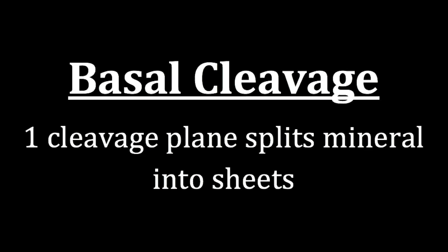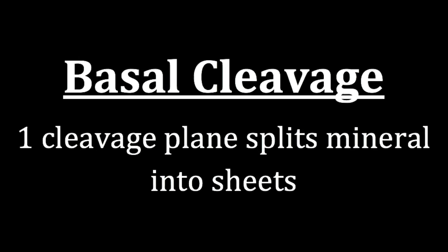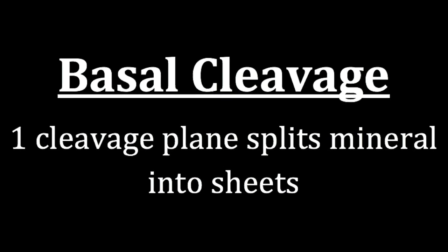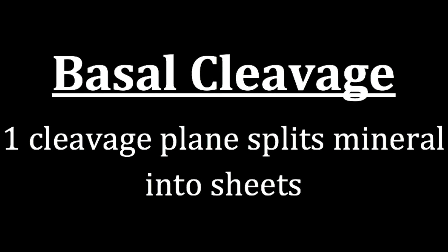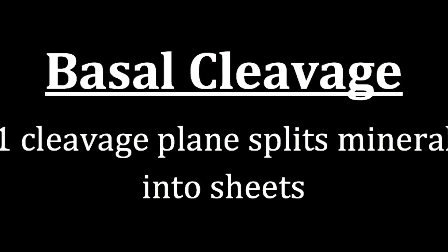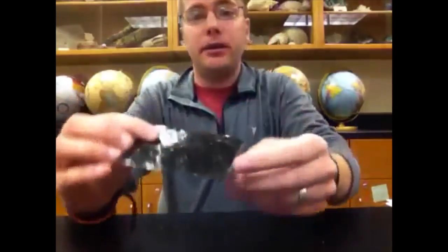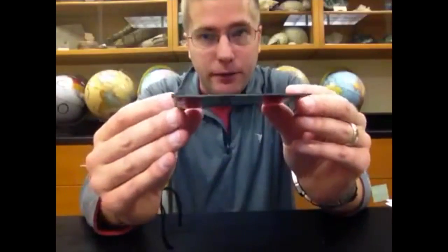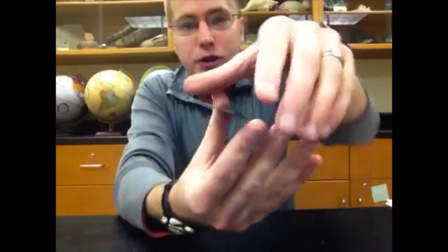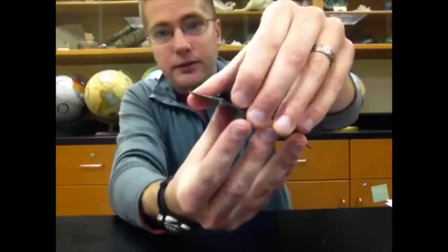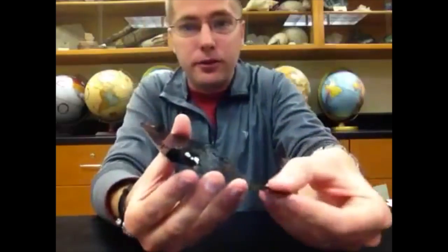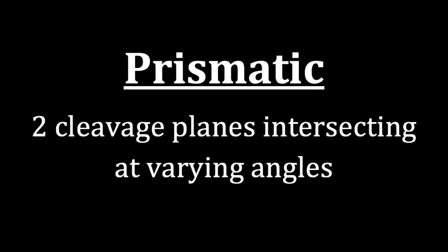The first type of cleavage that we will see in a mineral is called basal cleavage. This is where minerals split along one cleavage plane and they break into sheets. So when you look at the mineral, you should see it's very flat like a sheet and you should be able to pull it apart like sheets of paper into flat sheet-like pieces showing you one cleavage. Because there's only one plane in basal cleavage, we do not need an angle, because we need at least two cleavage planes to make an angle.